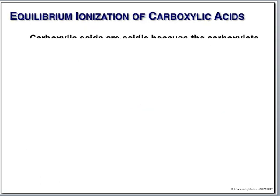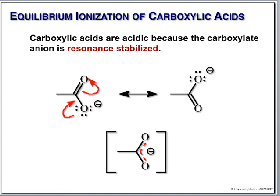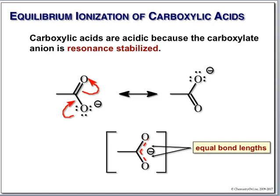Carboxylic acids are called carboxylic acids because they're acidic. The reason is that they can form a stable anion. One rule of life: the more stable the anion, the stronger the acid. Why is this a stable anion? Because it is resonance stabilized — there are two equivalent resonance forms. If you actually look at the carboxylate anion, the bond lengths between the two oxygens are identical, and there's half a negative charge on each of the two oxygens.